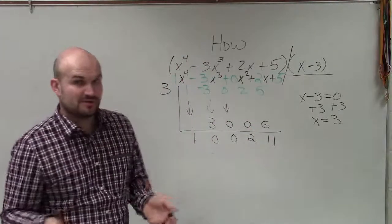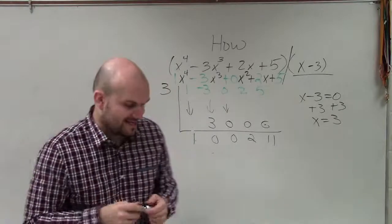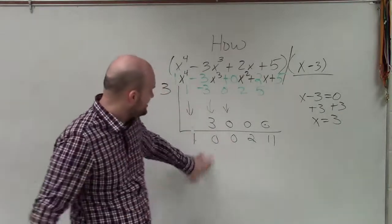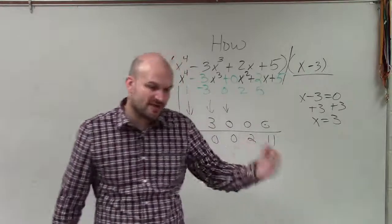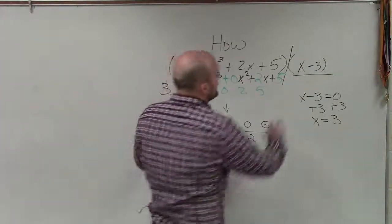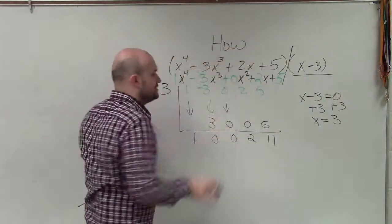Now, we cannot go any further. So therefore, that is where it's going to end. Now, I did actually want to have a remainder here, because if this last term was 0, then your remainder would be 0. And that would tell you that your factor evenly divides into your polynomial.